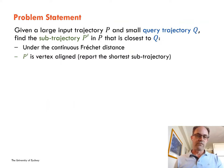A more formal definition of the problem is as follows. We are given a large input trajectory P and a small query trajectory Q, and the goal is to find the sub-trajectory P' in P that is closest to Q.